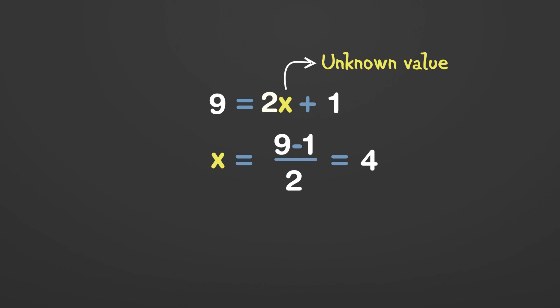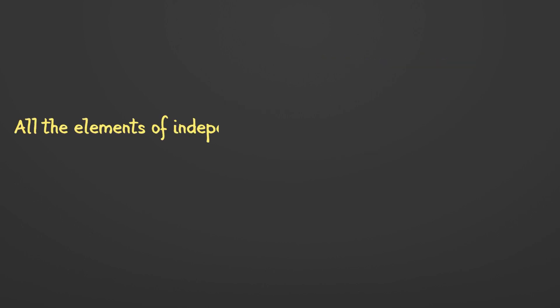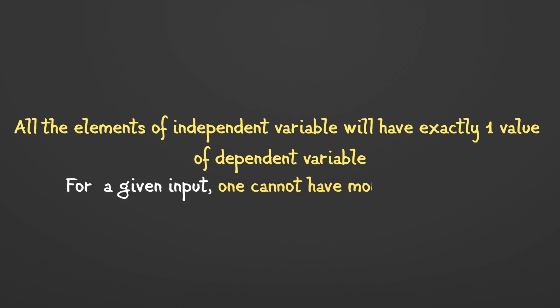The next very important concept behind function is that all the elements of an independent variable will have exactly one value of a dependent variable. In other words, I can say that for a given input, one cannot have more than one output. To understand it, let's see an example, y equals x plus 1. It's a function that input x values, add 1 to it, and return it as the output.